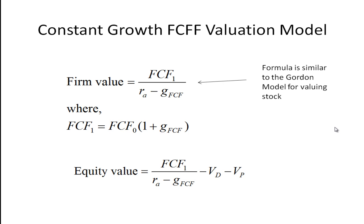If it turns out that free cash flow grows at a constant rate, then we get a formula that's similar to the Gordon model for valuing common stock. That is, it's free cash flow one period into the future divided by the interest rate minus the growth rate. The interest rate here being the weighted average cost of capital and the growth rate being the growth rate of free cash flow. The free cash flow one period in the future is the current free cash flow times 1 plus the growth rate of free cash flow. If we wanted the equity value, we use the value of the firm minus the market value of the debt minus the market value of the preferred stock.